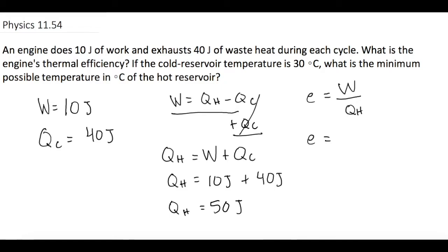So now let's figure out the engine's efficiency. So E is equal to work which they say is 10 joules over QH which we figured out is 50 joules, so that gives us 1 over 5 or 0.2 or an energy efficiency of 20 percent.